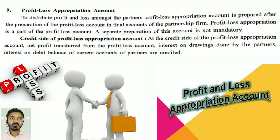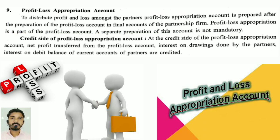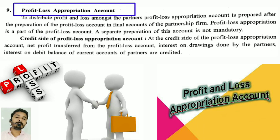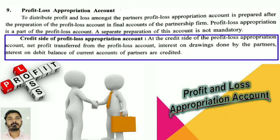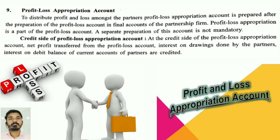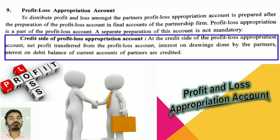A separate preparation of this account is not mandatory. At the credit side of the Profit and Loss Appropriation Account: net profit transferred from the Profit and Loss Account, interest on drawings done by the partners, and interest on debit balance of current account of partners are credited.